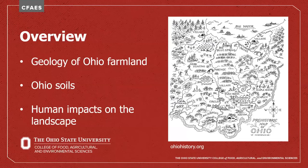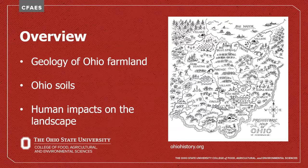I want to give a quick overview of what my talk will cover today. I'm going to talk about the geology of farmland in our region, starting with ancient geology and then talking more about the recent geology that left us with the current landscape we have today. I'll also talk about the different soils in our state, how they were formed and how we classify them, and then finish up talking about the impact humans have had on our landscape and the effect that has had on water quality in the basin.